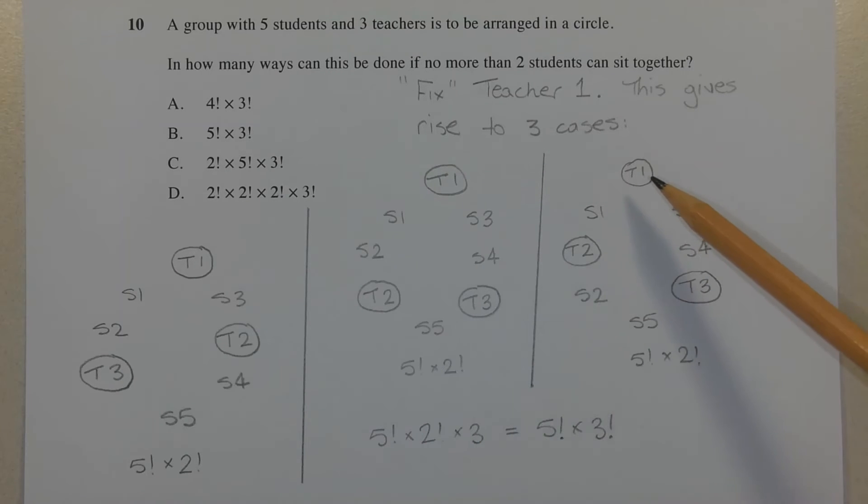Let's have a look at the second case. We have T1 up the top. We have student 1 here, student 3 and 4 here. We have teacher 2 here, teacher 3 here, and then we have two students here, student 2 and student 5. And again, there's 5 factorial times 2 factorial ways of arranging the teachers and students in this configuration.